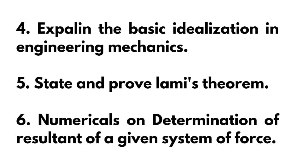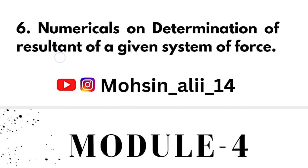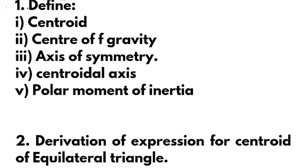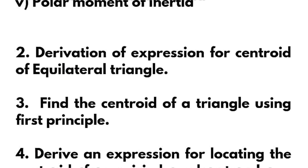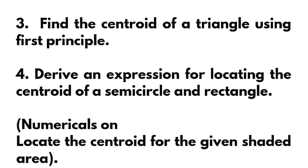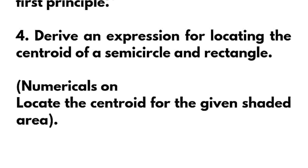You have to determine the resultant for that particular system. Next, module 4: define centroid, center of gravity and axes of symmetry, centroidal axes and polar moment of inertia. Derive the expression for centroid of an equilateral triangle. Next, find the centroid of a triangle using first principles. Derive an expression for locating the centroid of a semicircle and rectangle. And you should surely go for the numerical part — locate the centroid for the given shaded area, where the shapes will be given.